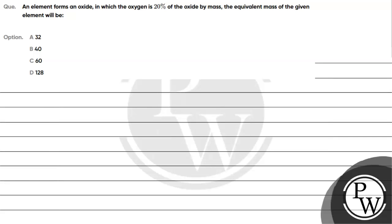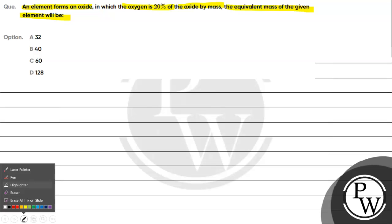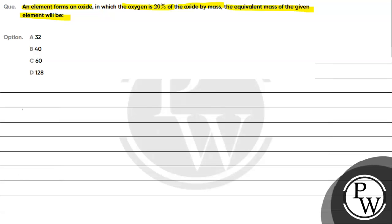Let's read this question. The question says: an element forms an oxide in which the oxygen is 20% of the oxide by mass. What is the equivalent mass of the given element? Option A: 32, Option B: 40, Option C: 60, Option D: 128.